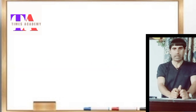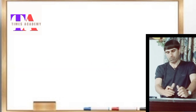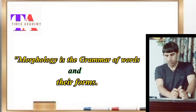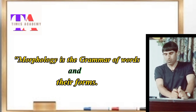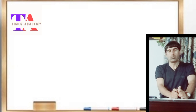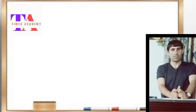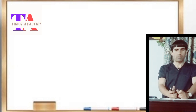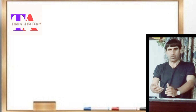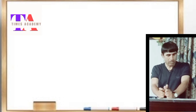The definition given in the book 'Outline of English Grammar' written by George Stern reads: morphology is the grammar of words and their forms, because a single word in English can have different forms.